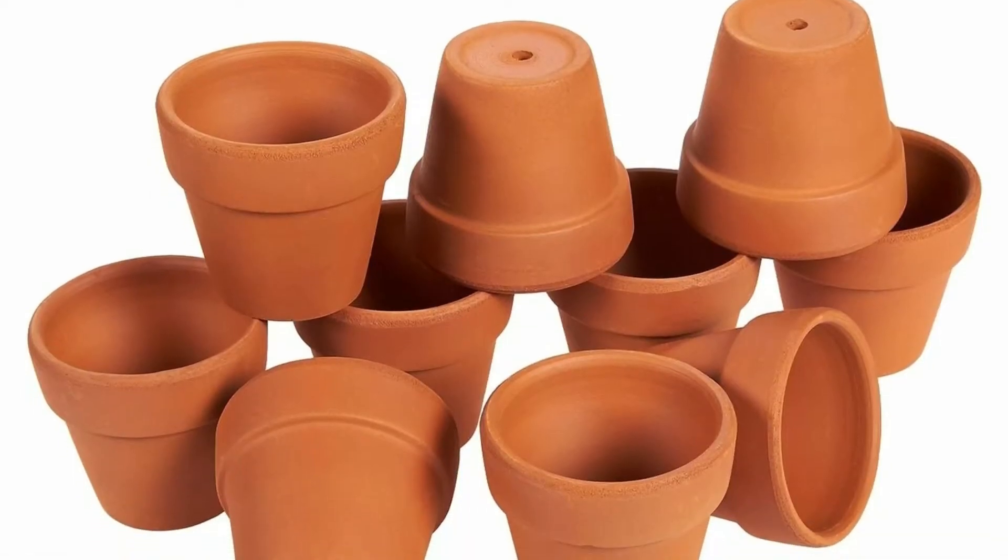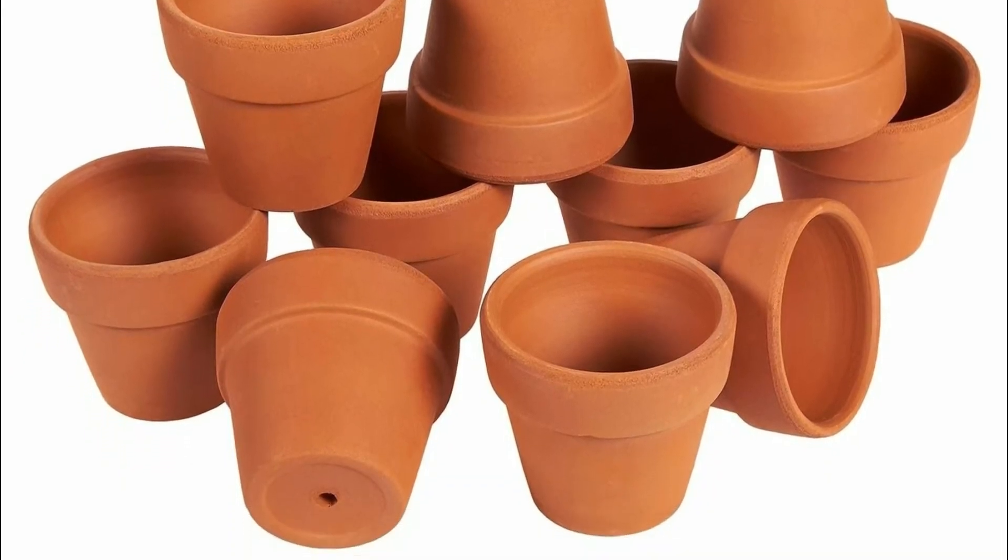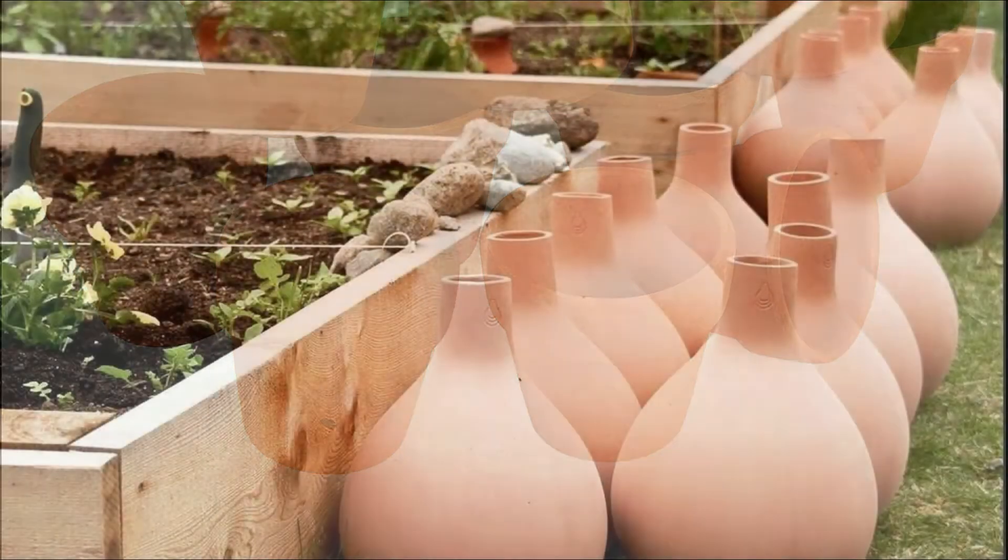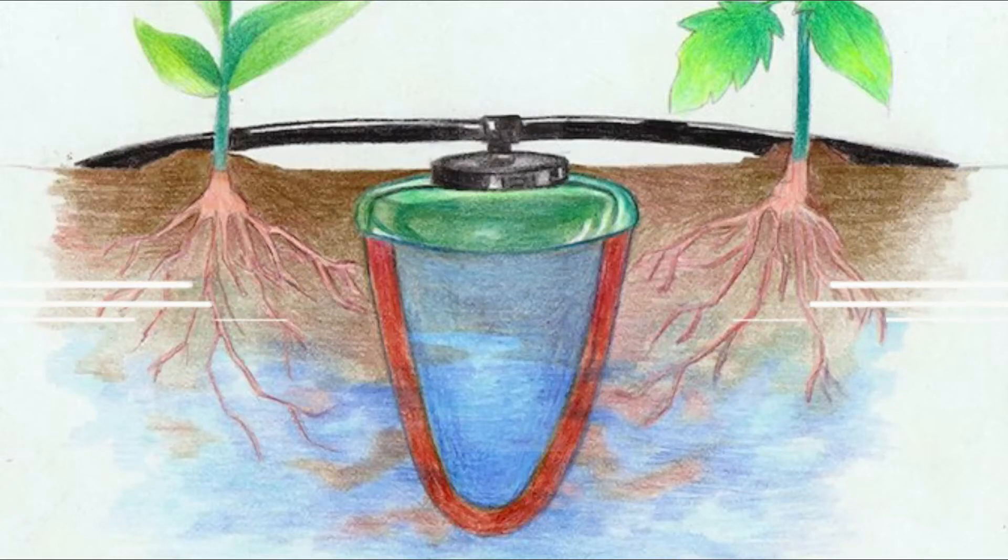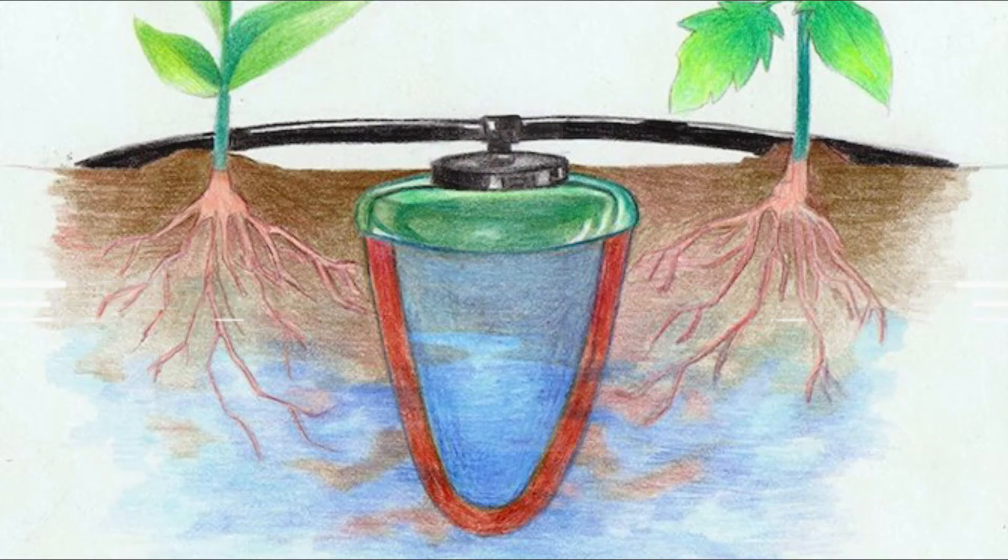In previous years, people used unglazed and porous clay pots called alas for irrigation. The soil would slowly suck water from the sides and bottom of the ala which would moisturize the soil.